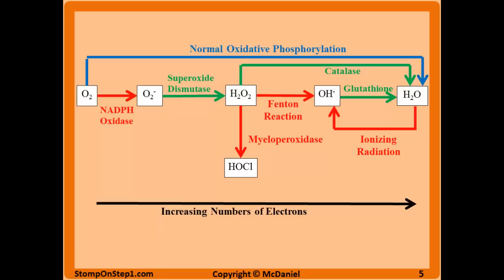A defect in NADPH oxidase causes chronic granulomatous disease (CGD), an immunodeficiency due to the neutrophils' inability to generate free radicals needed to destroy foreign materials. Specifically, this makes individuals susceptible to recurrent infections by catalase-positive organisms. Most organisms are catalase-negative — they don't have catalase — so they have a small amount of naturally produced peroxide which can be converted to HOCl by neutrophils and used to destroy phagocytosed material. However, catalase-positive organisms make their own catalase enzyme which degrades the peroxide and prevents this process, leaving neutrophils without HOCl or superoxide.